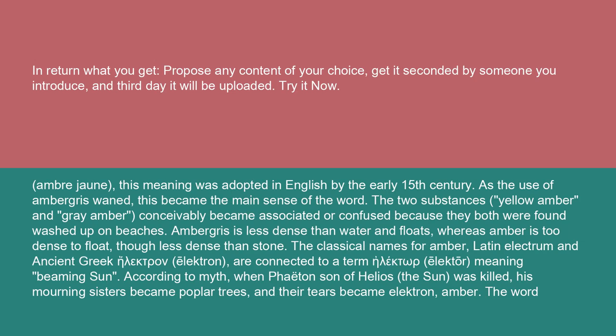This meaning was adopted in English by the early 15th century. As the use of ambergris waned, this became the main sense of the word. The two substances, yellow amber and gray amber, conceivably became associated or confused because they both were found washed up on beaches. Ambergris is less dense than water and floats, whereas amber is too dense to float, though less dense than stone.